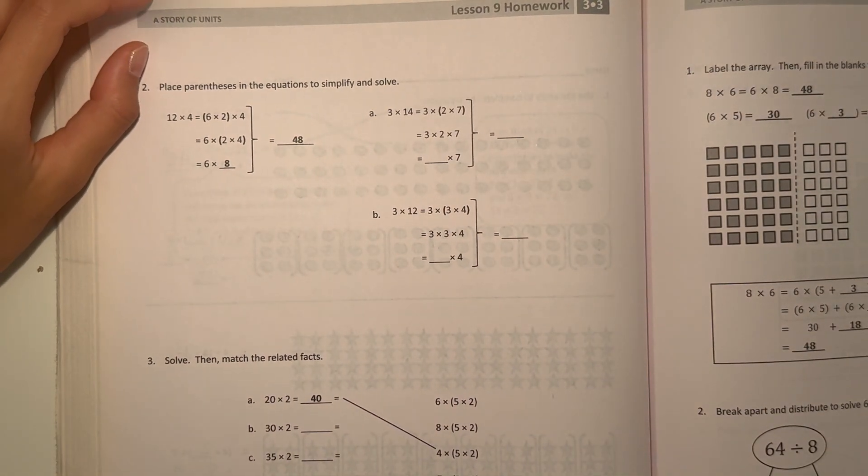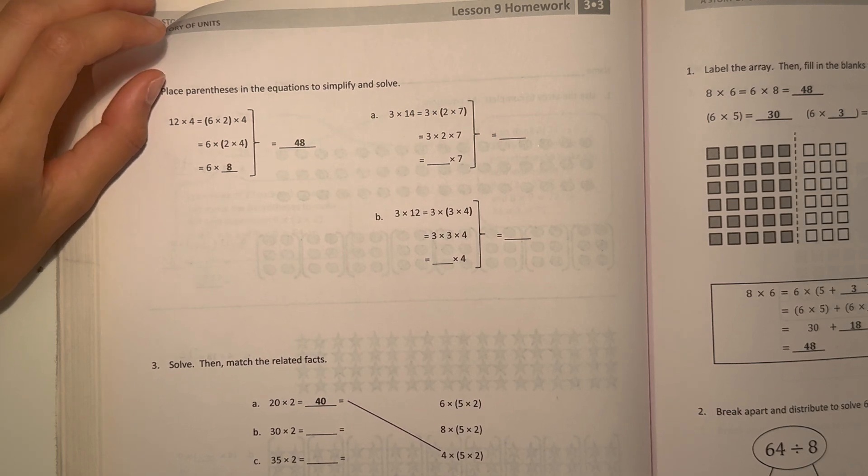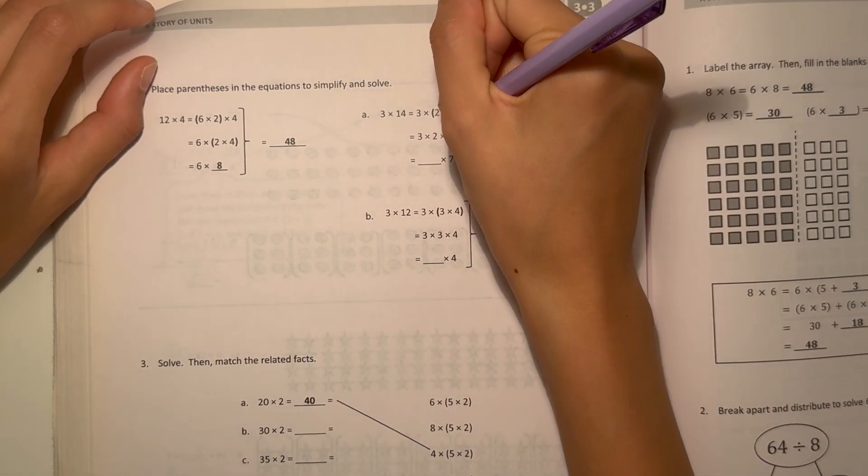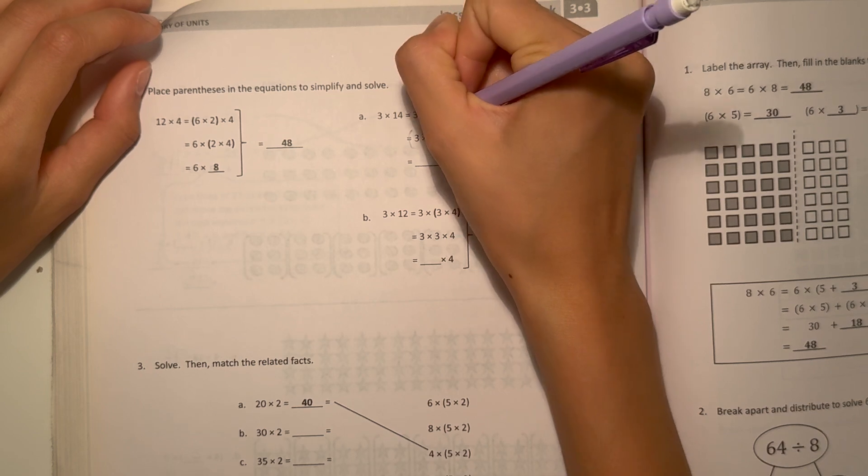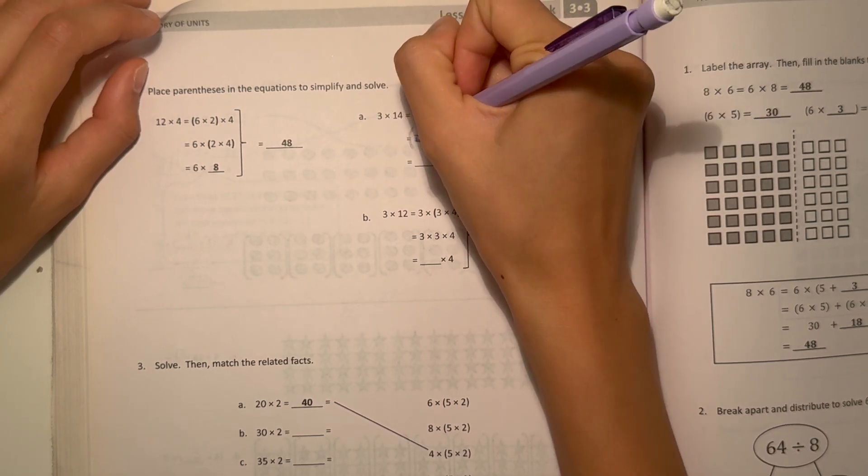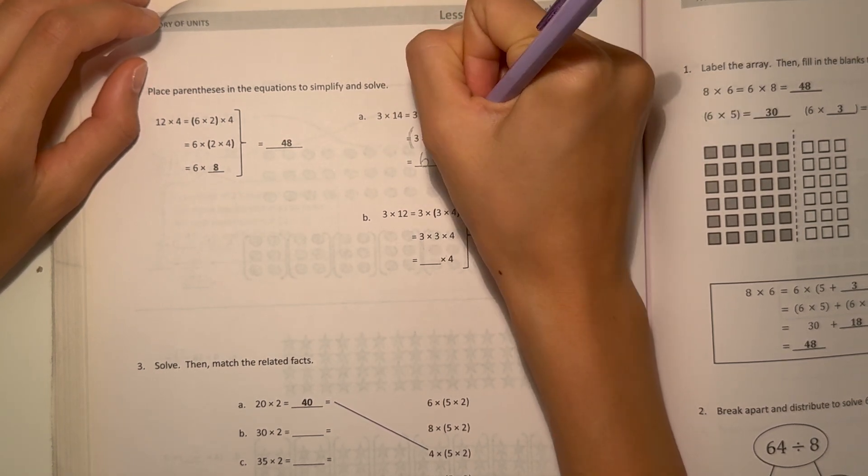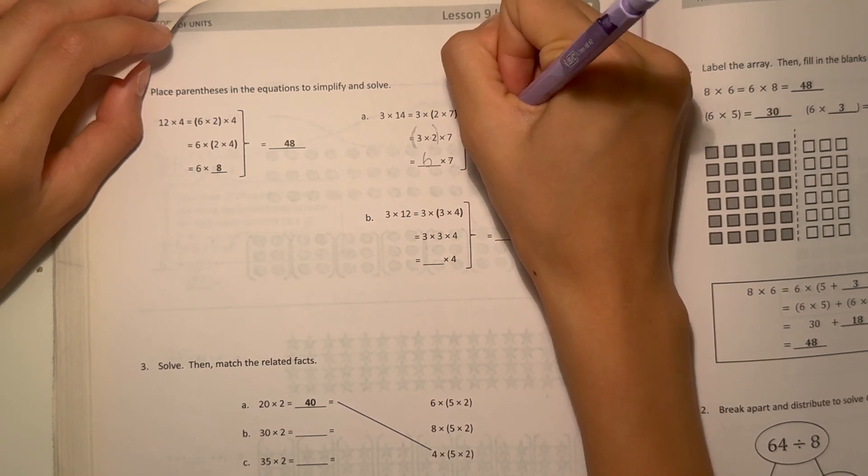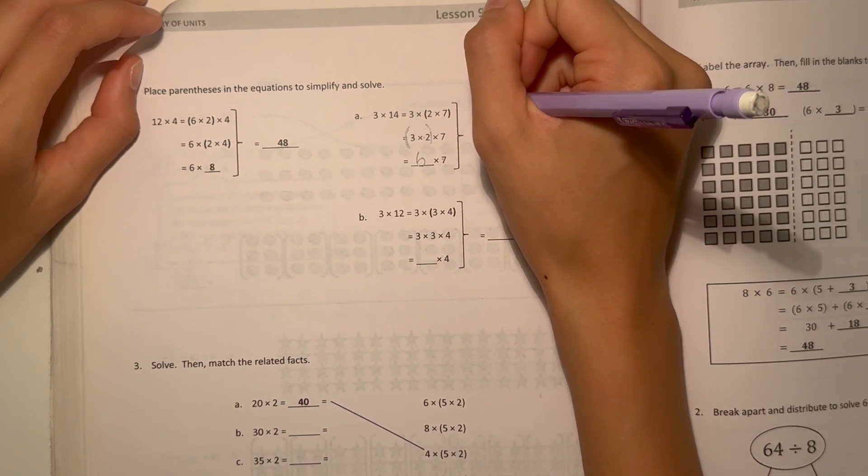Okay, 3 times 2 times 7. And that becomes 3 times 2 times 7. They wrote it here. I can put parentheses around here. So 3 times 2, we have 6 times 7 now. And that would be 42, which means 3 times 14 equals 42.